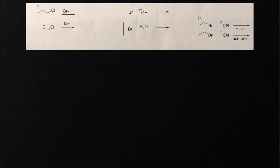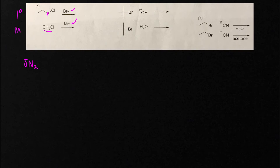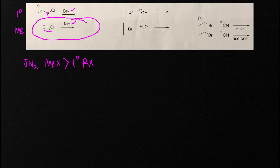In part E, we've got a primary alkyl halide and a methyl alkyl halide with the same nucleophile. Both proceed by SN2. Due to sterics, methyl halides react faster than primary alkyl halides, so this bottom reaction is going to be faster.